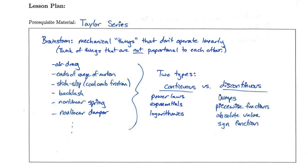There are two types of nonlinearities, divided by the way we describe them mathematically. The first type is continuous nonlinearities — those we can describe with a continuous function, such as a power law, exponential, or logarithmic function. The key is that these are smooth, continuous, and differentiable functions. We can write them in terms of ODEs, where a single ODE describes the system, even if it is nonlinear.